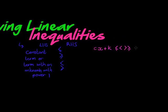Then we'd have another expression on the other side, something like dx plus m, where d and m are numbers. We'll only have our one unknown, let's say x. And what we're trying to do is find what values we can use for x so that this expression will be whatever this sign is compared to that expression.